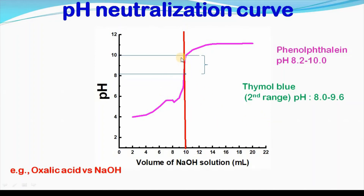From the pH neutralization curve, we see that the vertical line of the curve is within the region of pH 8 to 10. So phenolphthalein and thymol blue can both be used for this type of titration.